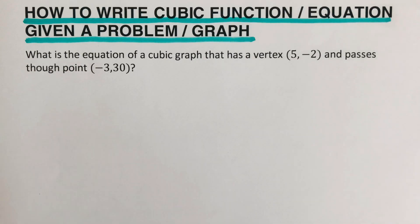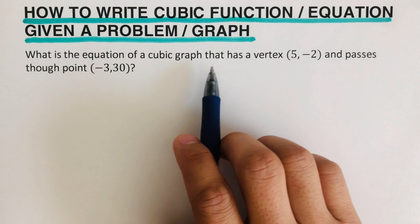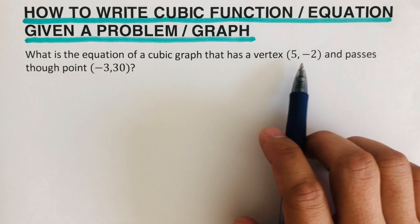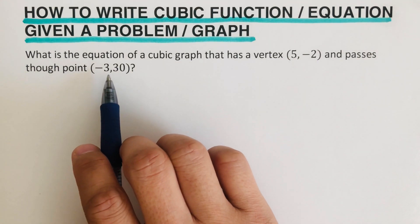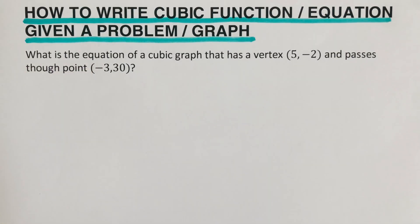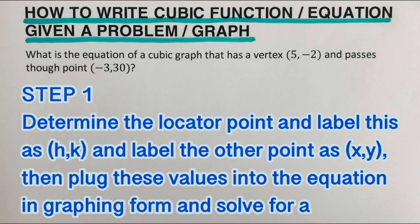Let's have this first example. What is the equation of a cubic graph that has a vertex of 5, negative 2, and passes through the point negative 3, 30? The first step is to determine the locator point and label this as HK and label the other point as XY. Then plug these values into the equation in graphing form and solve for A.